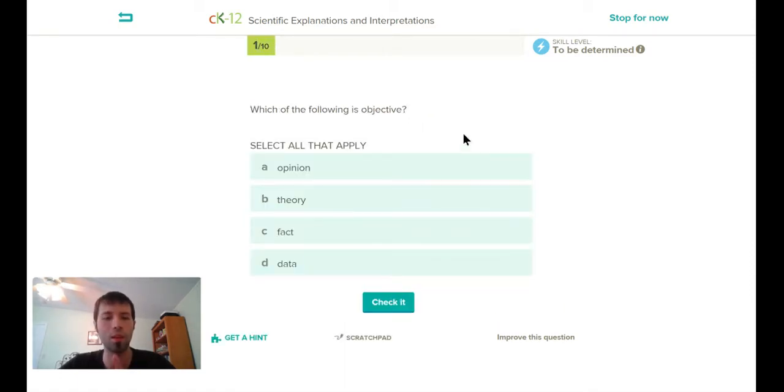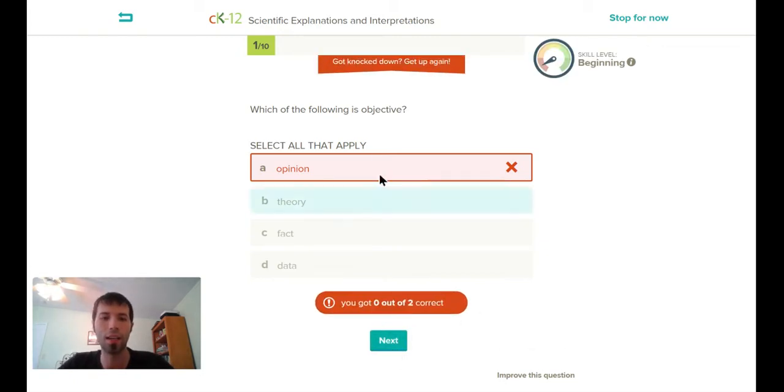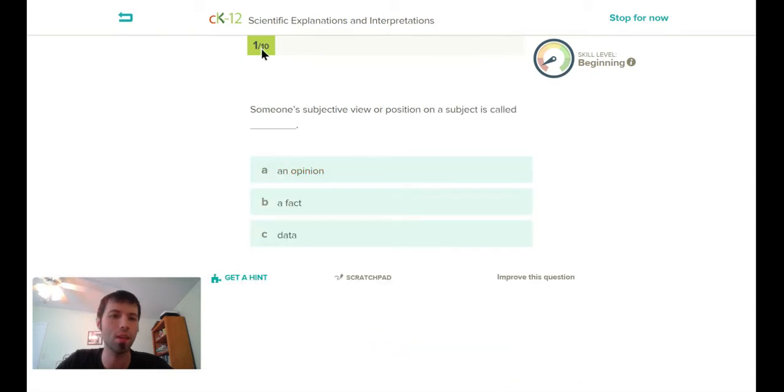I'm gonna get another one wrong intentionally. Which of the following is objective? I know opinion is wrong. It says select all that apply, which means I know there's more than one right answer. I got it wrong. See, first of all it gives you these nice little motivational things - got knocked down, get up again. It gives me a little warning: I got zero out of two correct. It gives me some hints here and there.